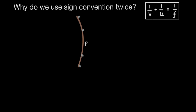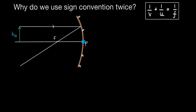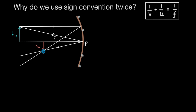We start by deriving the mirror formula for a concave mirror. Here is a concave mirror with pole P, and this is where the object is placed. Let's say the height of the object is H0. One ray parallel to the optical axis passes through the focus upon reflection. Here is our focal point, and the other ray is incident at the pole P itself, where it reflects back intersecting with the original ray. The point of intersection is where the image is formed; the height of the image is HI. Let's label the object distance U, image distance V, and the focal length F.